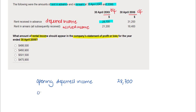The next thing we're going to do is deduct the opening accrued income. The opening accrued income would represent a balance that was outstanding at the end of last year. Because it was income truly earned in the previous year, it would have been added last year, but this year it's not relevant for our numbers. We're going to be deducting the opening accrued income, and that is £21,200.